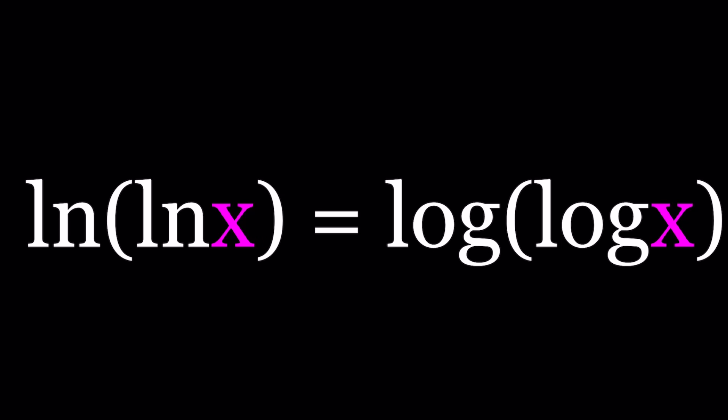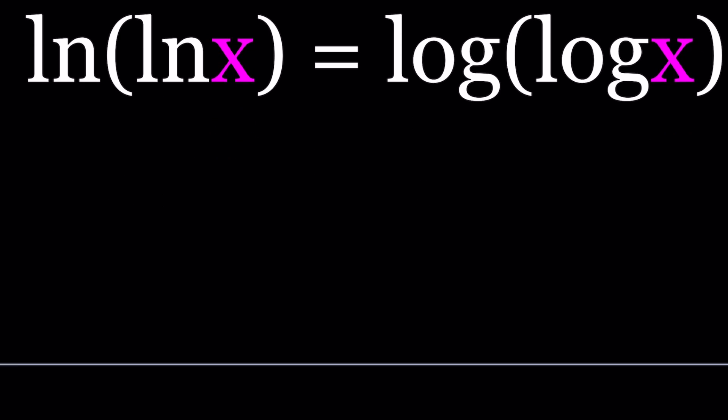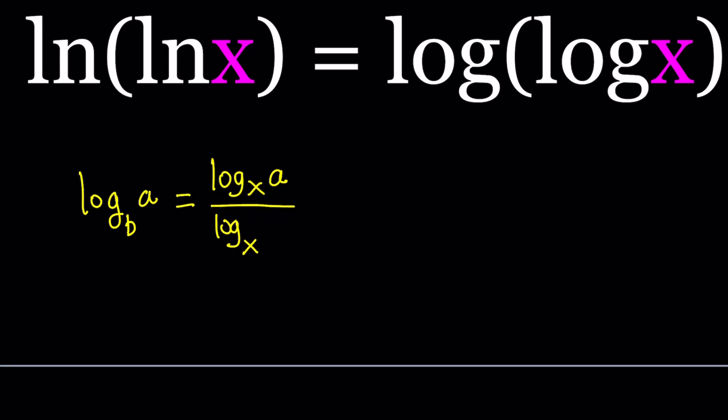Now we do have a formula called change of base. Anytime you have something like log base b of a and we want to write it in a different base such as 10 or e or any other base, let's say we use base x, we can write it as a quotient of two logs with base x. The a goes here because a is the higher number and b goes here.